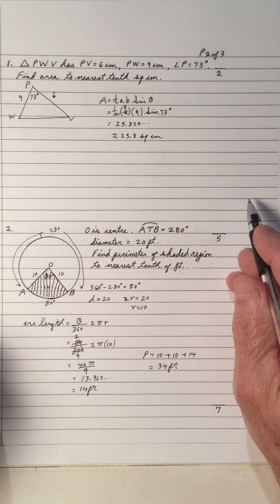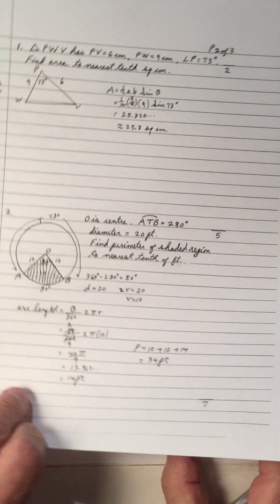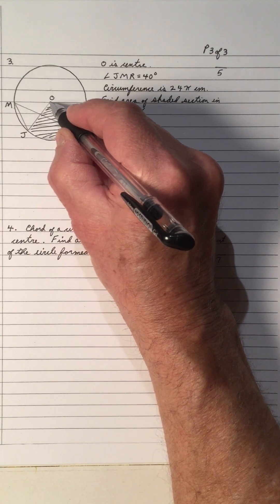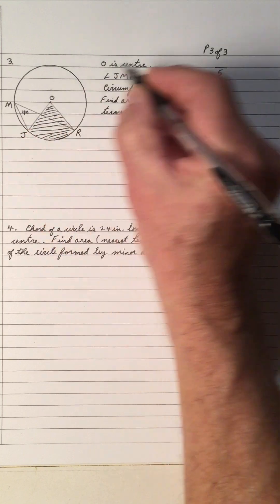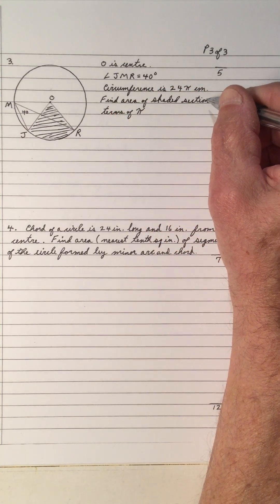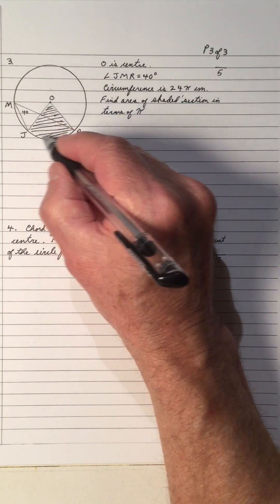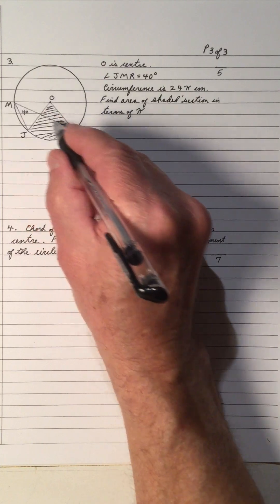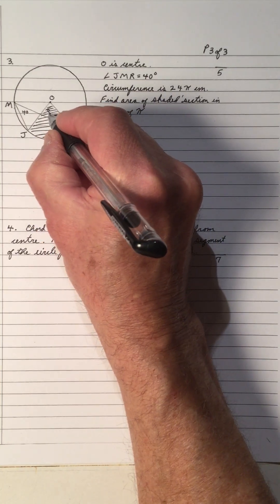So the perimeter of the shaded region is 34 feet — I had to add the two radii to go all the way around the sector. Number 3: We have a circle where O is the center. Angle JMR is 40°. Since JMR is an inscribed angle formed by two chords with the vertex on the circle, the intercepted arc JR is 80°, and the central angle is therefore 80°.